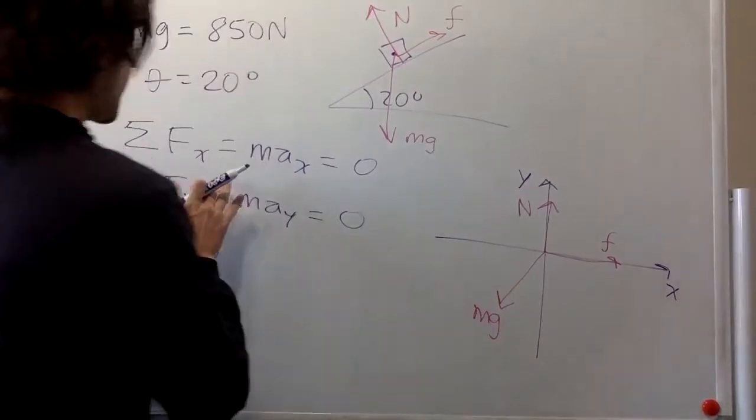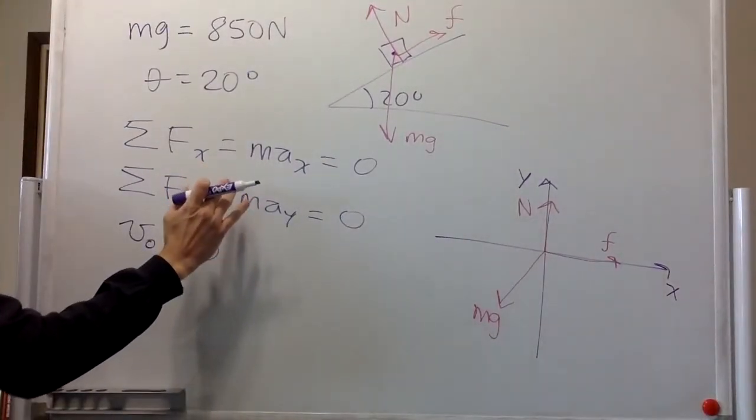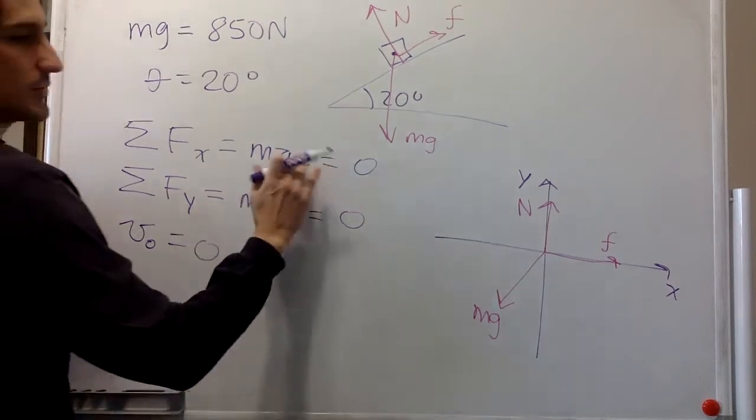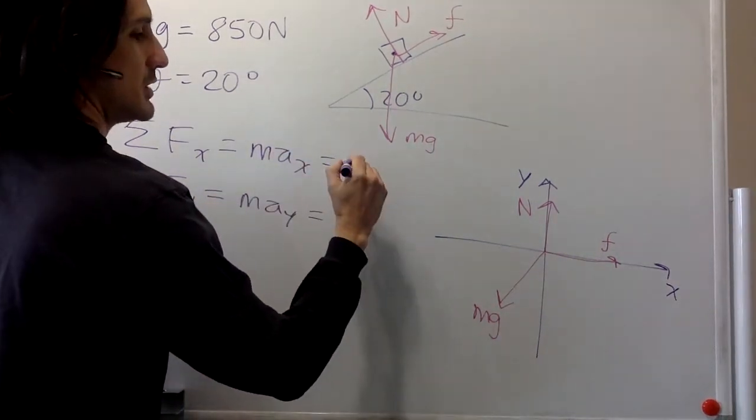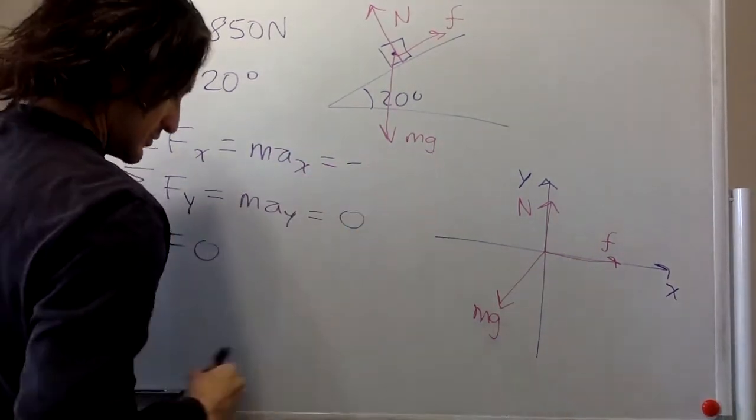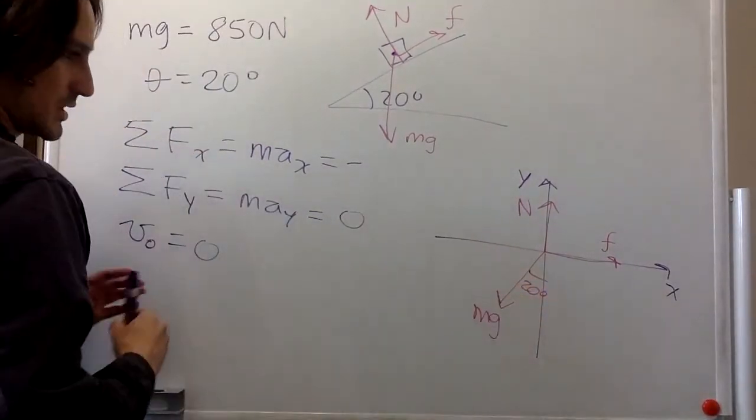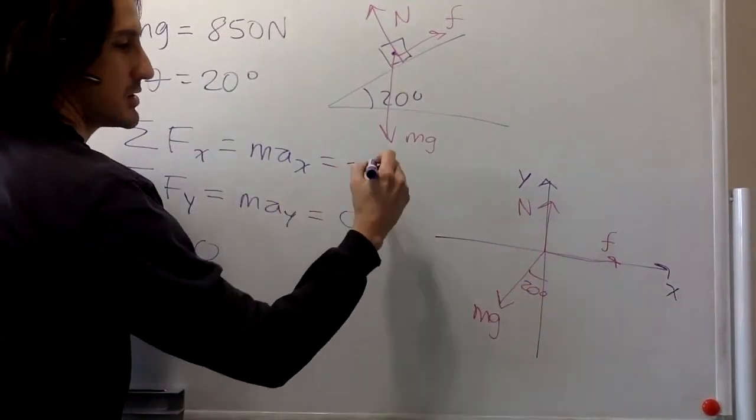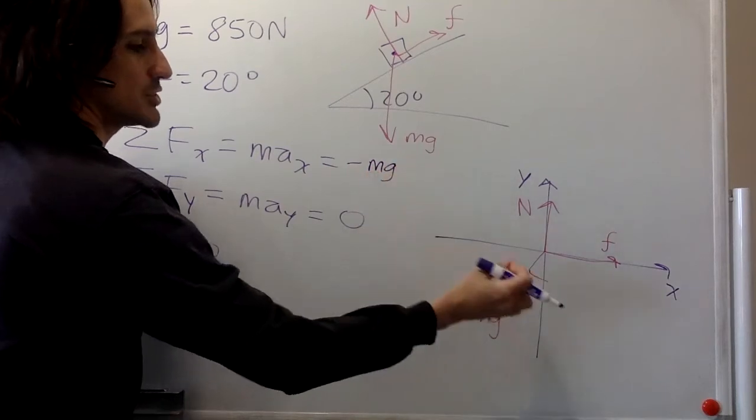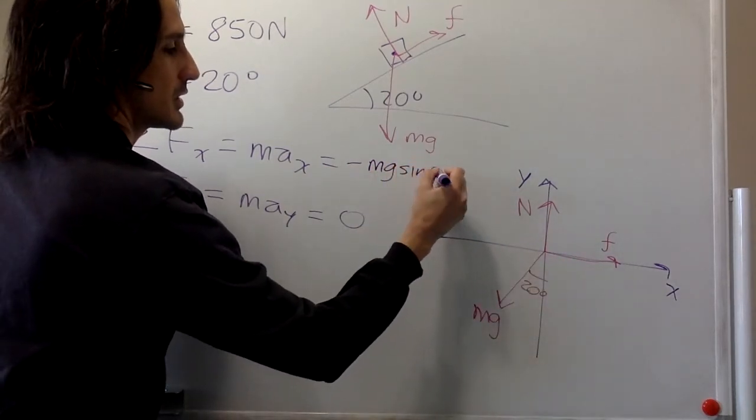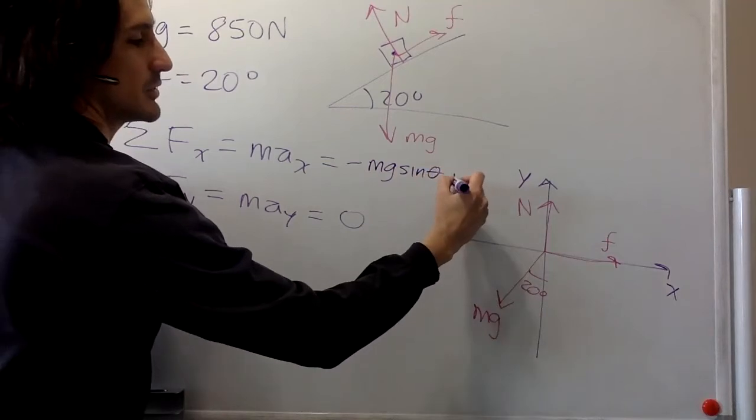So, sum of forces in x. We have negative mg sine theta plus the friction.